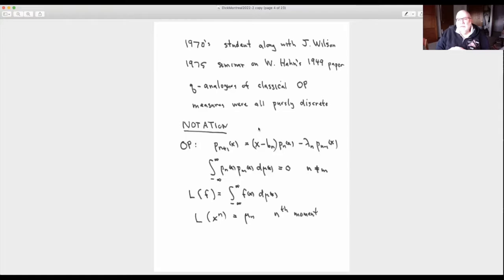Well, in the 1970s, I was a student along with Jim Wilson. And as George talked about, there was this 1975 seminar on Wolfgang Hahn's 1949 paper, orthogonal polynomials that satisfy a Q difference equation. So this Wolfgang Hahn paper gave Q analogs of classical orthogonal polynomials and their measures. But every measure was purely discrete, as it turned out. So the point of the seminar was to try to go through this paper, understand it, and see if there were things left out. Through this, presumably, you'd have to know some things about Q series.